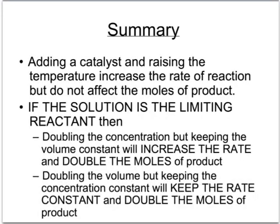In summary, doing things like adding a catalyst and raising the temperature will increase the rate of reaction, but they won't affect the number of moles of product, because the number of moles of product depends only on the number of moles of the limiting reactant. If the solution is the limiting reactant and you double the concentration while keeping the volume constant, that increases the rate of reaction and also doubles the number of moles of product — so you'd get twice as much hydrogen.